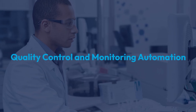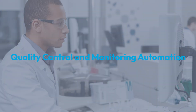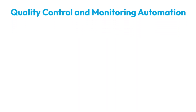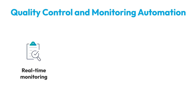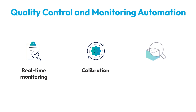Quality control and monitoring automation is vital for maintaining the highest in-lab standards. Automated systems continuously monitor lab processes, ensuring everything stays within acceptable limits while minimizing the potential for human error. Additionally, automated calibration and predictive maintenance systems help keep equipment in top condition, reducing downtime and improving overall reliability.